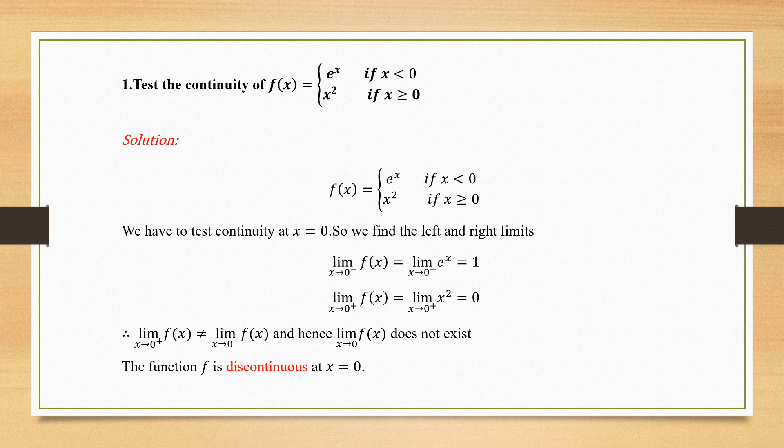For the right limit: limit x tends to 0-plus of f(x). We are approaching 0 from the right side, so we use x² — not e^x, because it is clearly defined that way in the problem. Substituting x = 0 gives 0² = 0. So the right-hand limit is 0. The left limit (1) and right limit (0) are not equal, therefore limit x tends to 0 of f(x) does not exist, and hence the function f is discontinuous at x = 0.